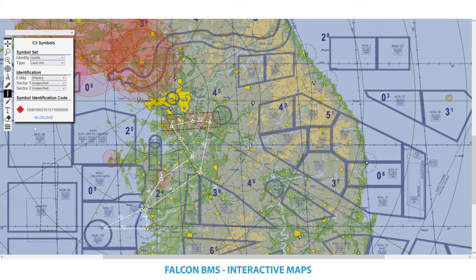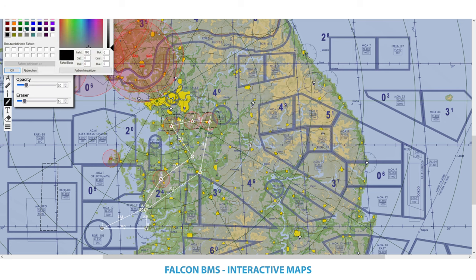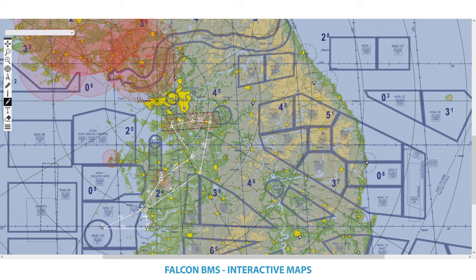The next part is the whiteboard, which has command and control symbols, drawing capabilities, text, and an eraser. The pencil settings let you set the line style for freeform drawing. You can pick a red color for line style and a blue color for fill, and set the fill to solid. You can draw freeform, and if you hold the Shift key you can draw straight lines. If you hold the Control key, you can draw ellipses. So you can draw a red-outlined, blue-filled ellipse — useful for flagging and marking Patriot coverage areas, for example.